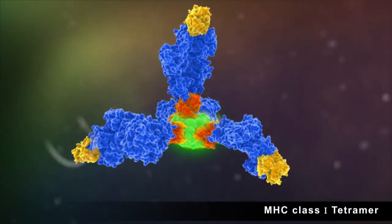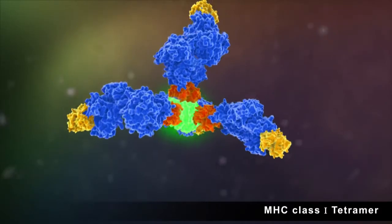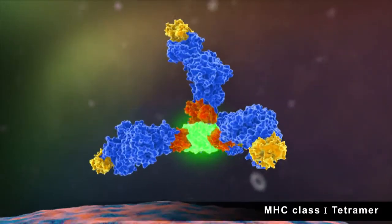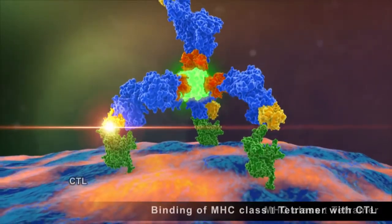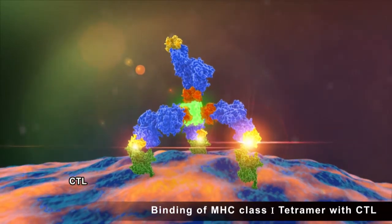The binding affinity between MHCs and TCRs is increased by tetramerization and can be used to directly visualize antigen-specific T-cells by flow cytometry.